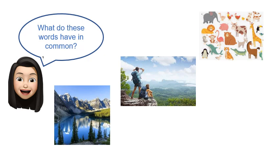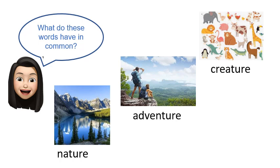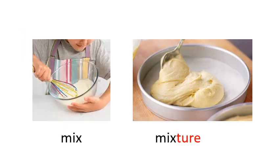Can you guess what these three images are representing and what those words have in common? The top right was 'creature', the middle word was 'adventure', and the bottom left was 'nature'. What do those words have in common? They all end with the suffix '-ture', spelled T-U-R-E: creature, adventure, nature. We've looked at this spelling rule before. When you add the suffix -ture to the end of a word, that word can become a noun. For example, 'mixture' is a noun formed by adding -ture to the verb 'mix'. Usually the suffix -ture is only added to verbs.